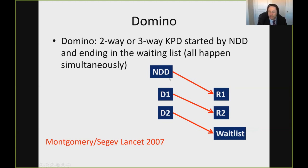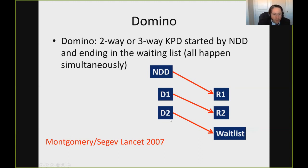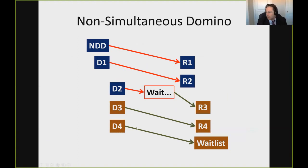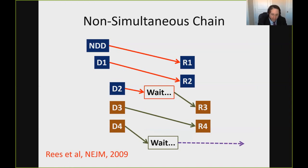We treat patients according to these phenotypes. If they're easy to match and easy to desensitize, we try kidney exchange for a few months, and if there's no match, we just undergo desensitization directly because we know they'll do well. If they're hard to desensitize but easy to match, we have them continue to wait in kidney exchange because desensitization would be too harmful. If they're hard to match but easy to desensitize, desensitization is probably best. If they're both hard to match and hard to desensitize, we use a hybrid approach combining kidney exchange and desensitization.